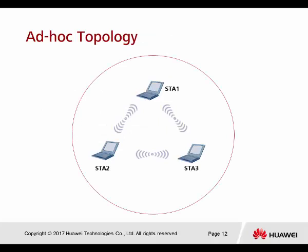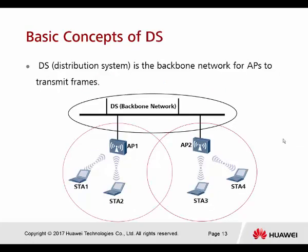The first one is ad hoc topology. For this connection mode, the BSS will be called independent BSS, because all the PCs here don't require connecting through the AP — they can form a connection by themselves using ad hoc or hotspot to form the connections. Then the next is the basic concept of DS. DS stands for distribution systems — in another word, we can call this the uplink connection for all the AP. It's a backbone network for the AP to transmit frames, because at the end of the day all wireless data still goes back to the wired network.